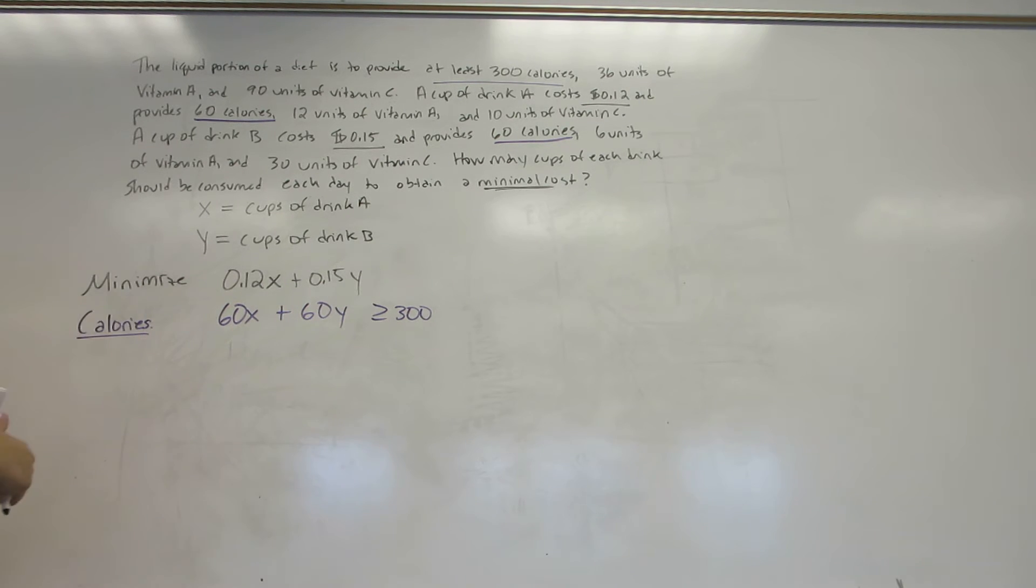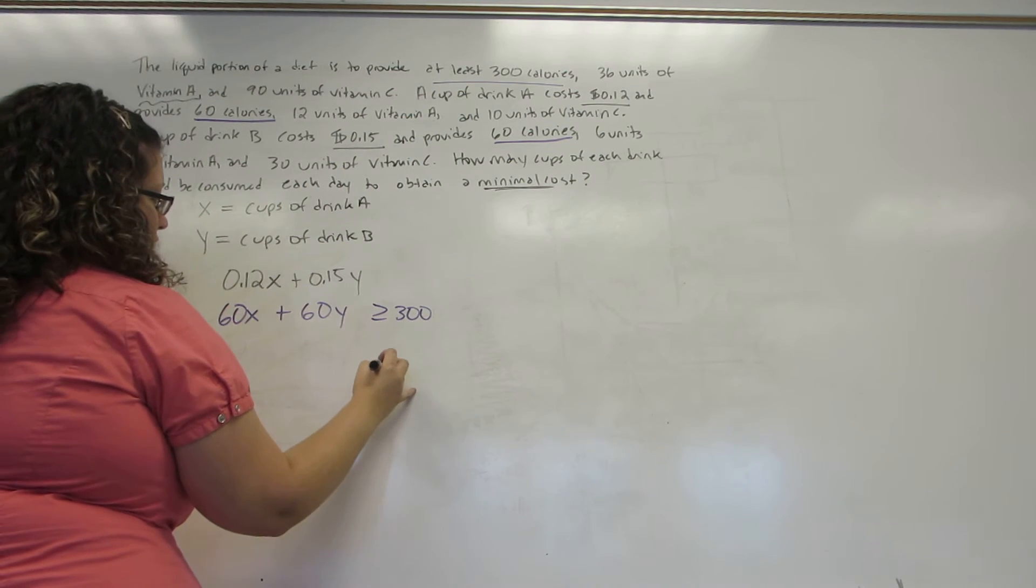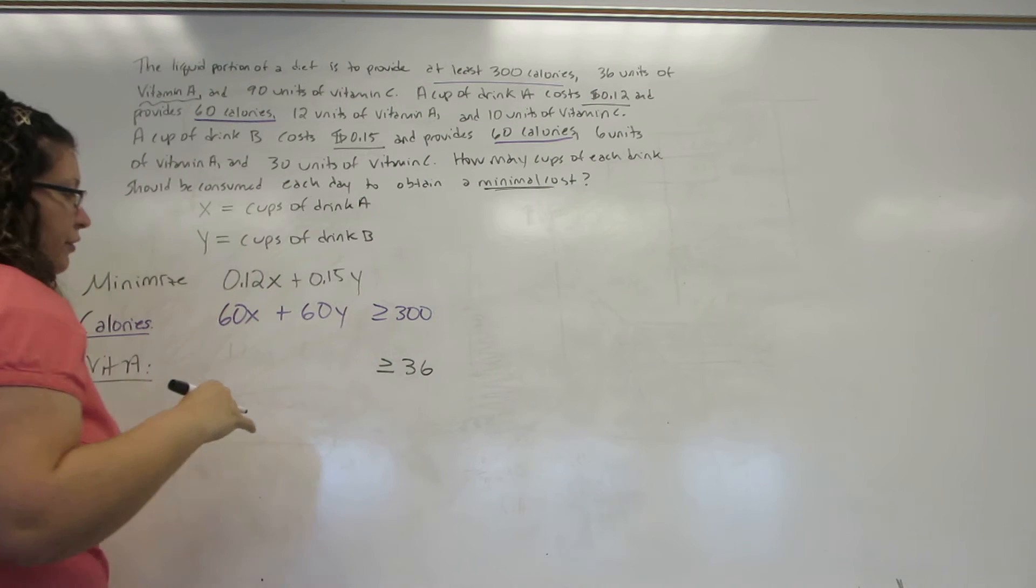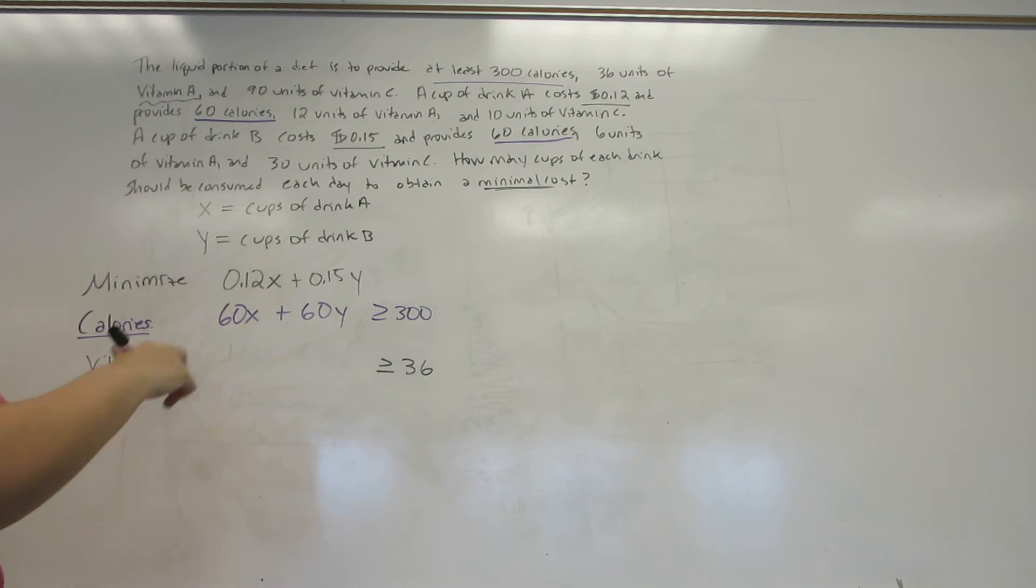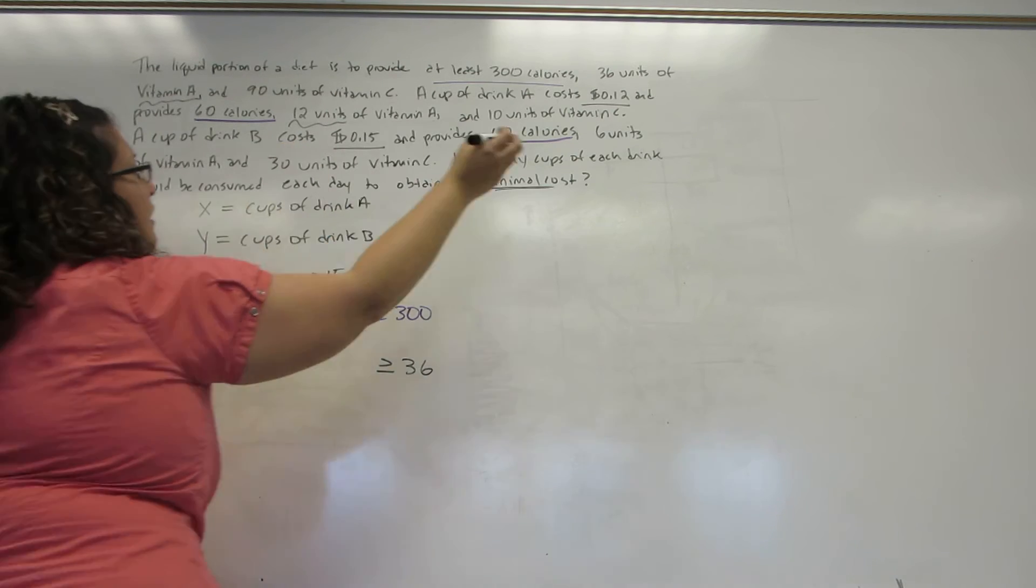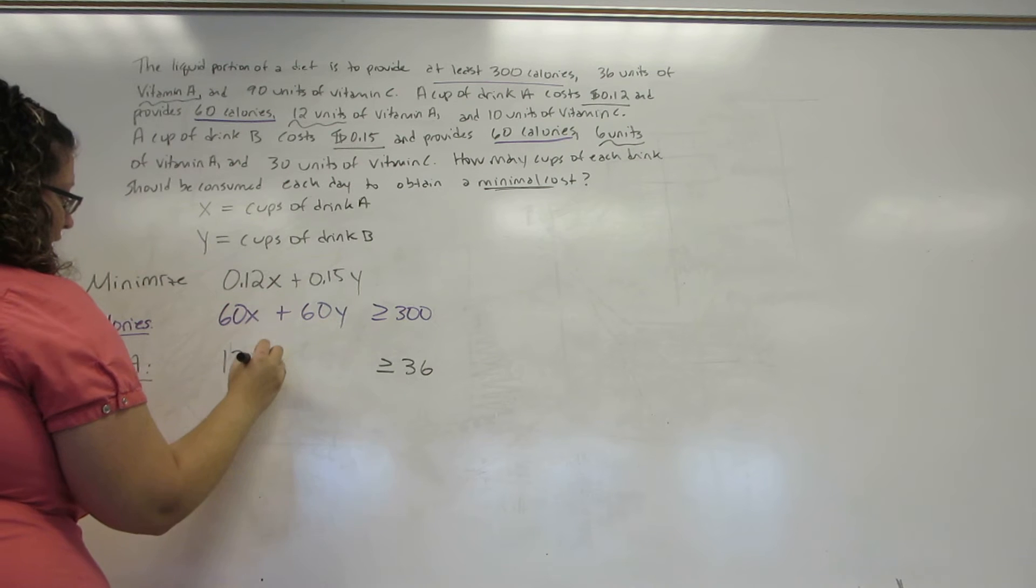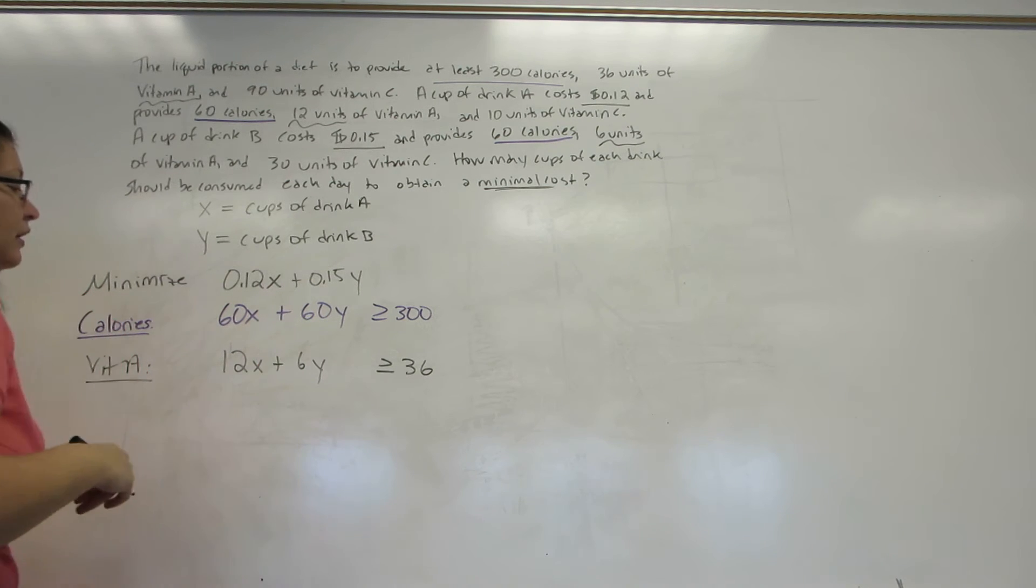Now it cares about vitamin A, so we're going to have a vitamin A constraint. I need at least 36 units, so I need to be greater than or equal to 36. Drink A gives me 12 units and drink B gives me 6 units. So I'm going to get 12X plus 6Y is greater than or equal to 36.